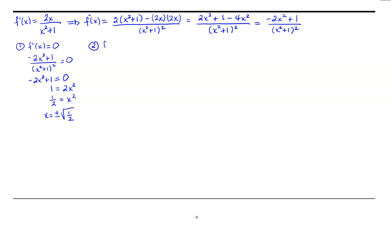The second source is where f double prime does not exist. Notice that our denominator is basically our previous denominator just squared, so there are no x values that would cause the second derivative to be undefined. So at this point we have 2 critical numbers for our second derivative, and we're going to go ahead and test those.